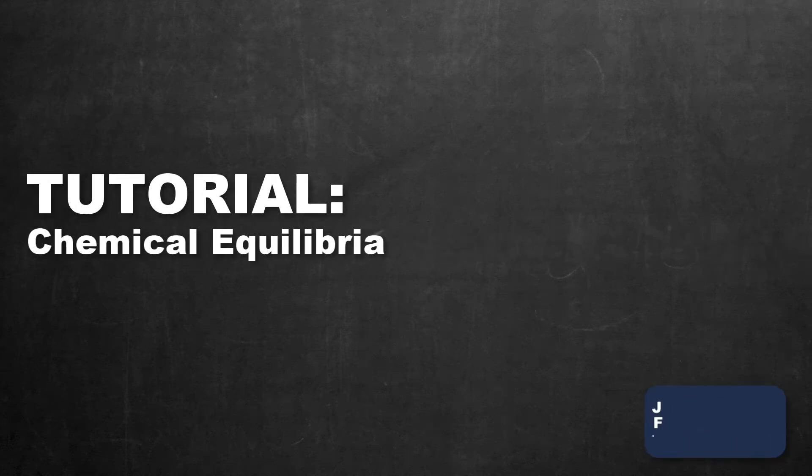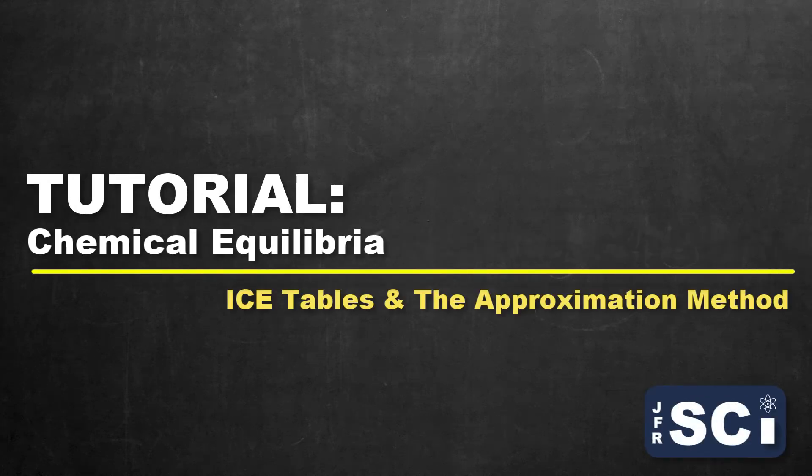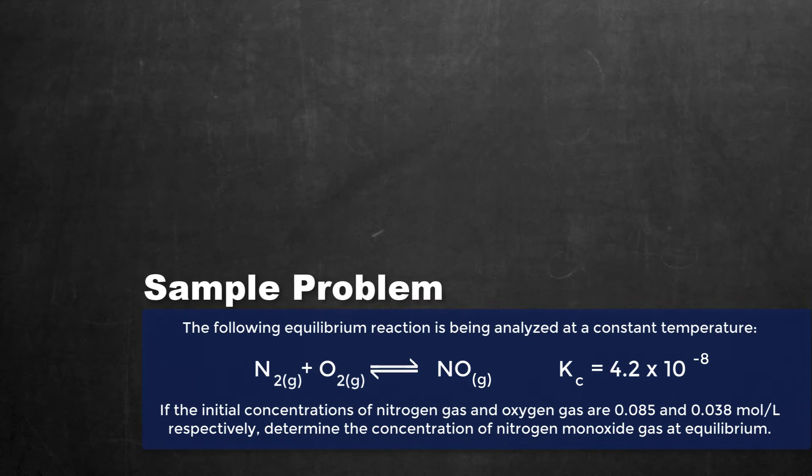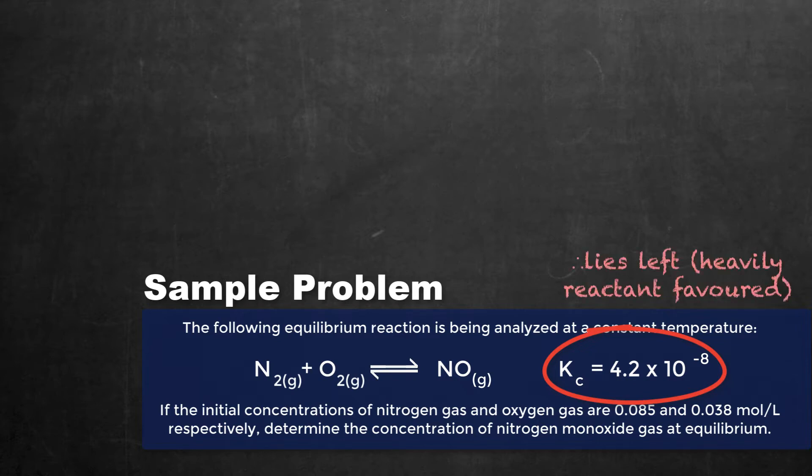Welcome to this tutorial involving the use of the ICE table and more specifically the approximation method. If we take a look at this particular sample problem, it is at equilibrium as denoted by the bidirectional arrow and we have a really low Kc value of 4.2 times 10 to the negative 8. That really low Kc value tells us this reaction lies to the left and is very strongly reactant favored.